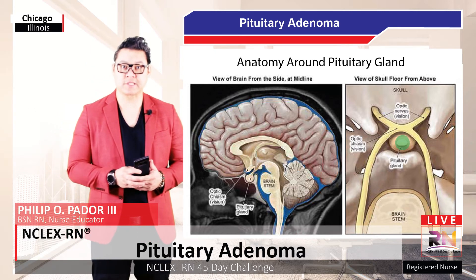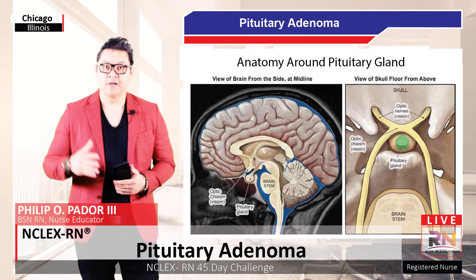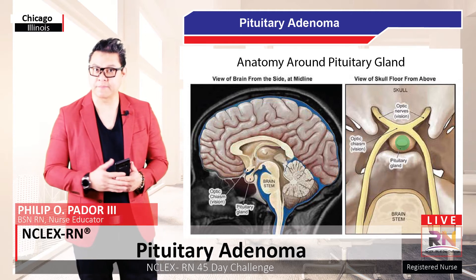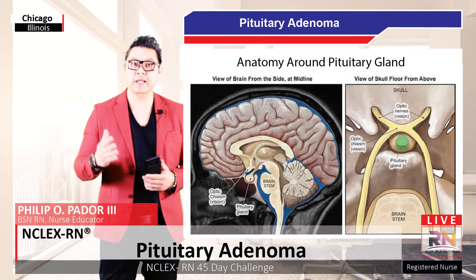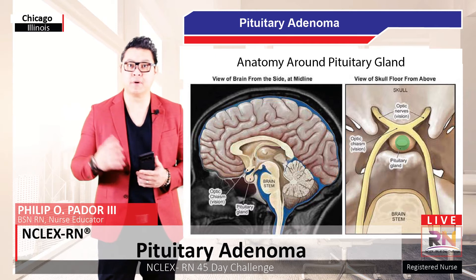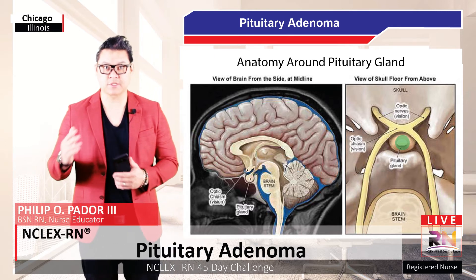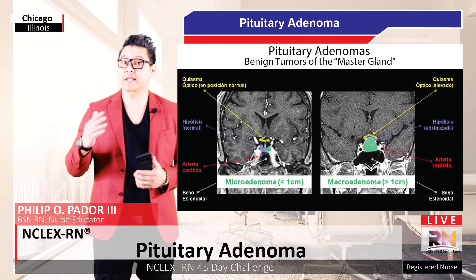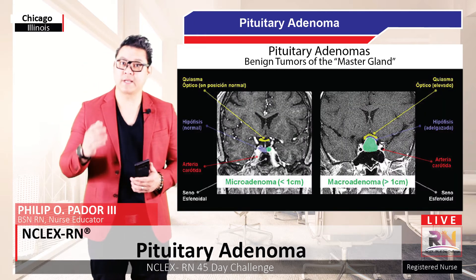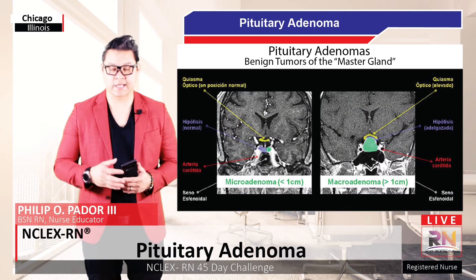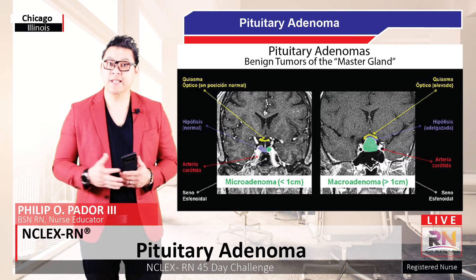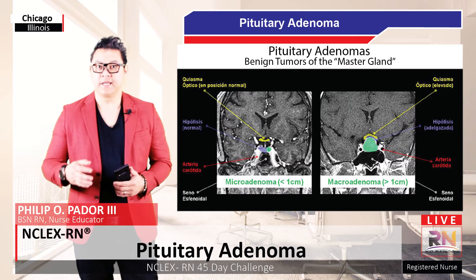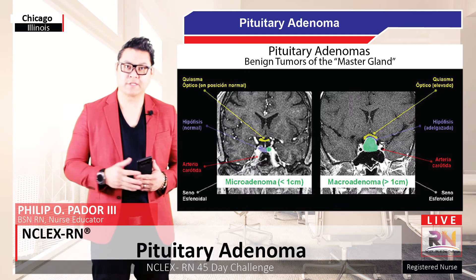Also in close proximity to the pituitary gland are the frontal lobes, temporal lobes, and the brain stem. Pituitary adenomas are by far the most common tumors associated with the pituitary gland. They are categorized by size as well as hormonal status. On the left is shown a micro adenoma and on the right, a macro adenoma.